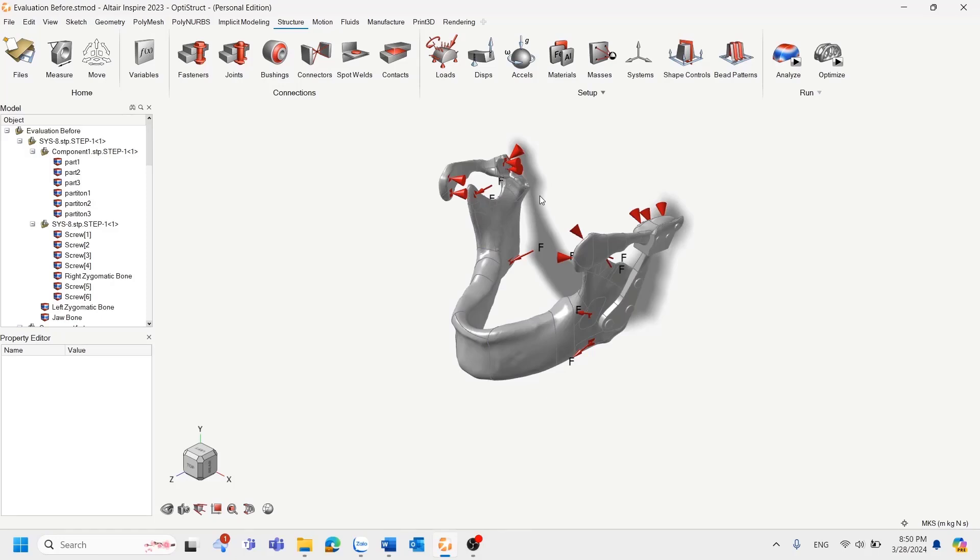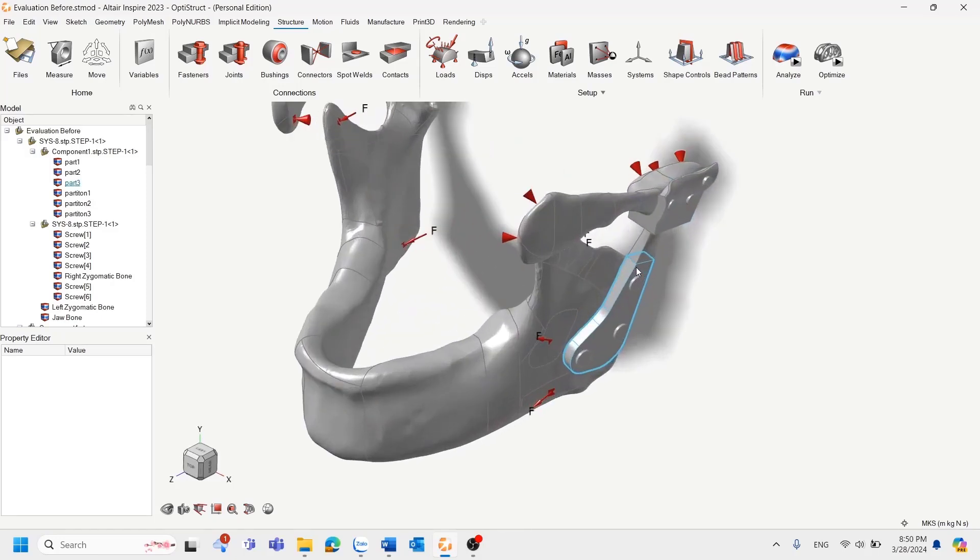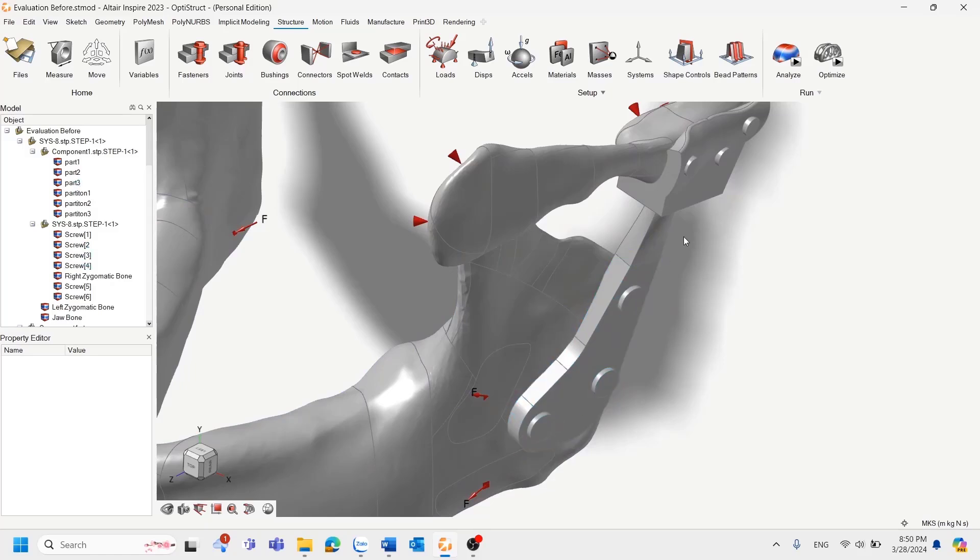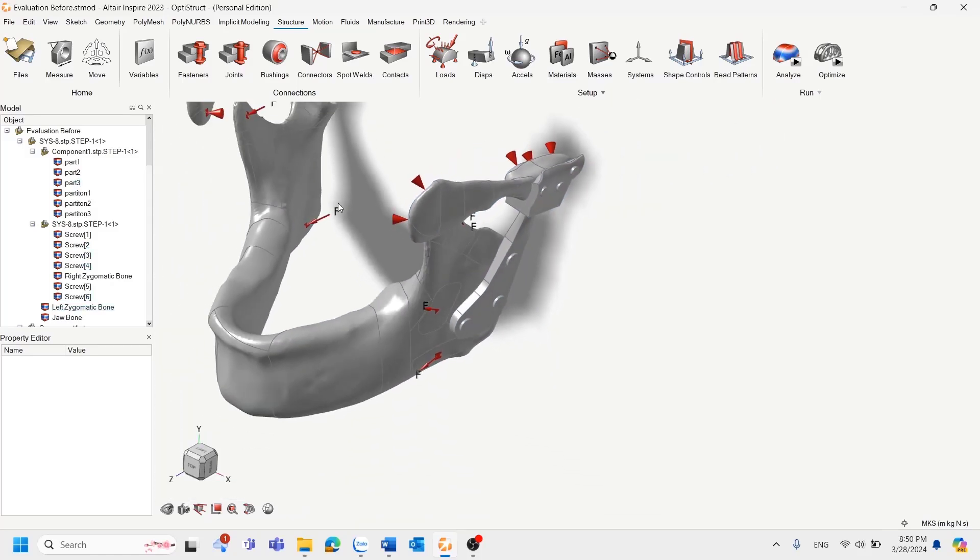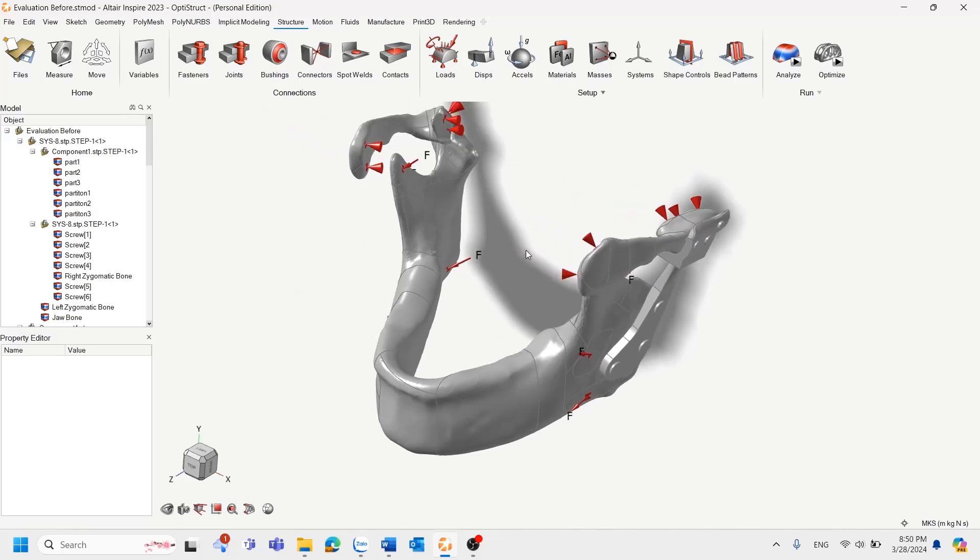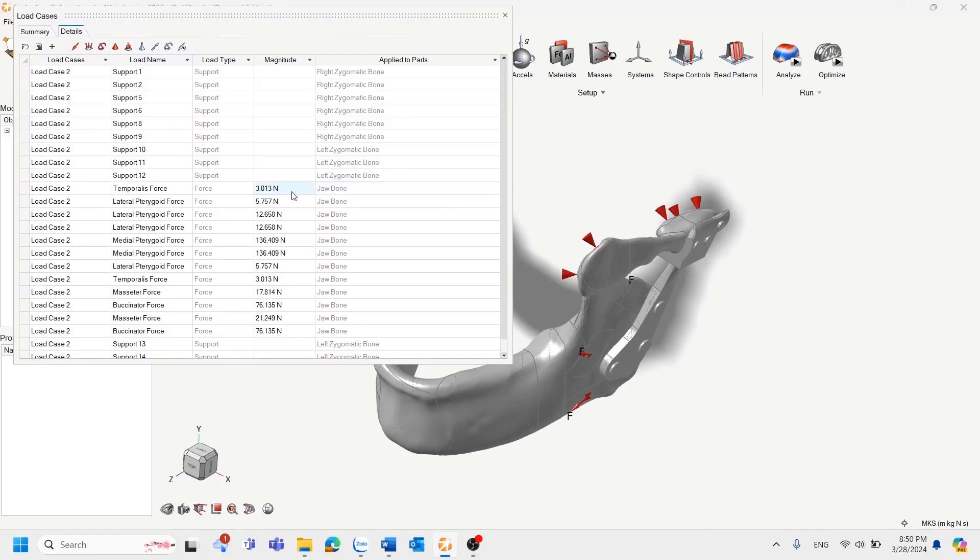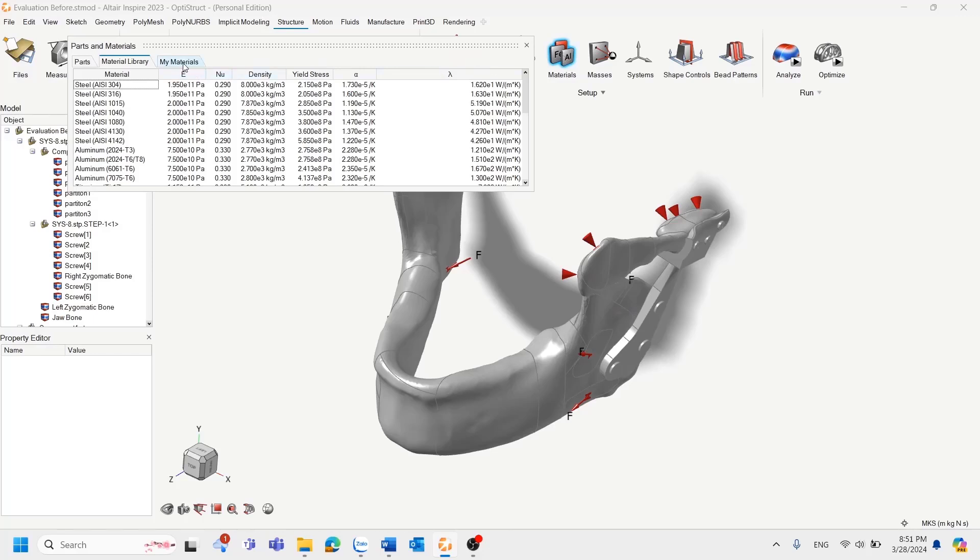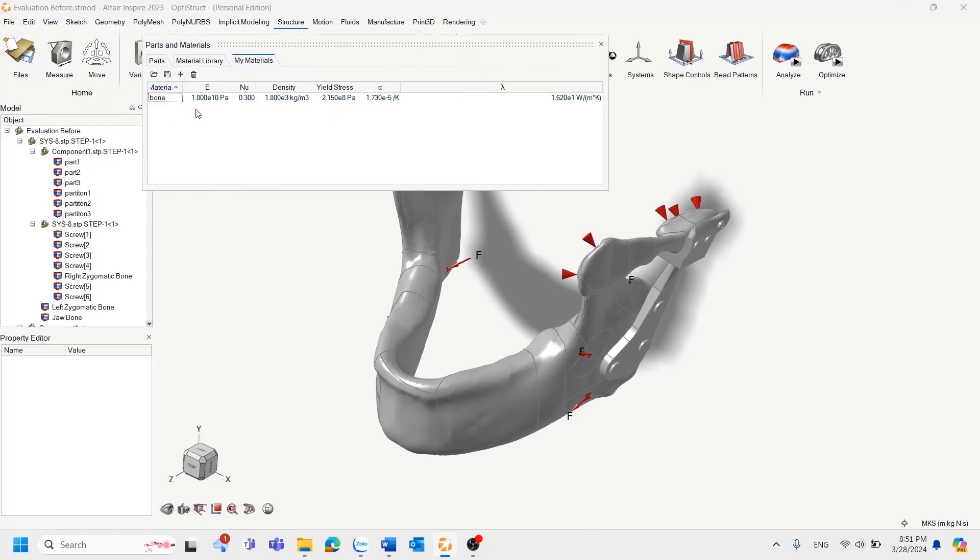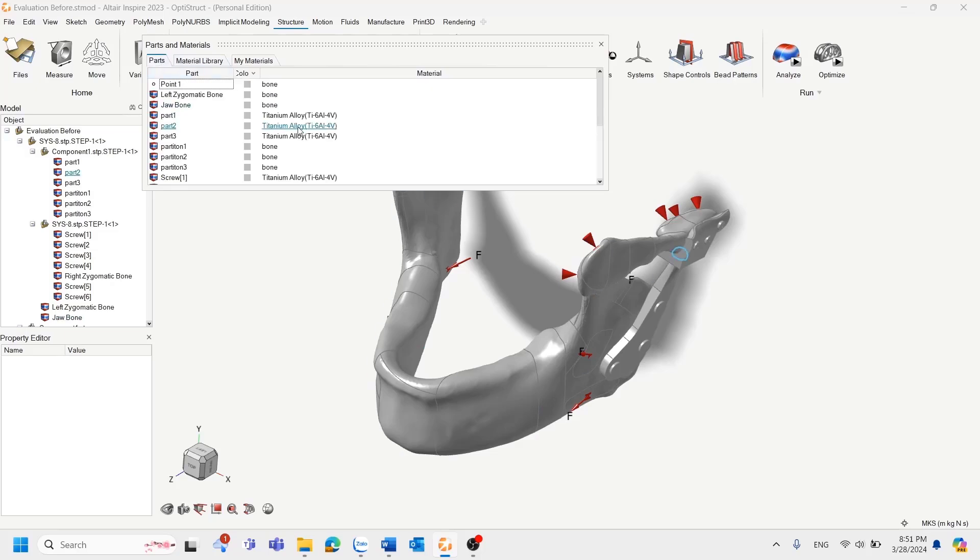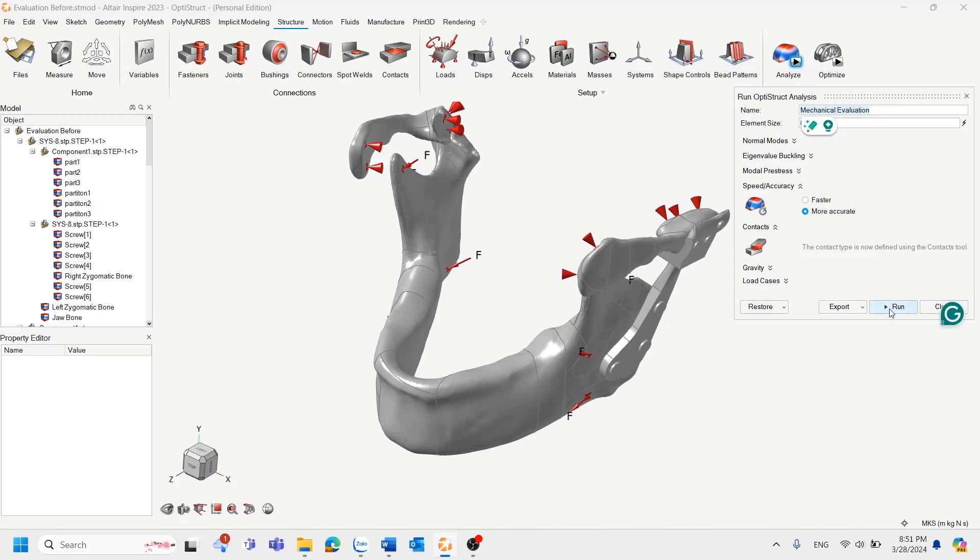This is our model in Altair Inspire. This part here is our TMJ implant and this part here is the fixation screw. To do the simulation process, we have to apply different force and boundary condition we have already applied. You can see that the right and the left geometric bone are fixed. The jaw bone is free to move. It has a lot of different force value and force direction. For the material, we have applied a bone material with some important physical property. And for the TMJ implant, we have the titanium alloy. Let's click on the simulation process and hit run.